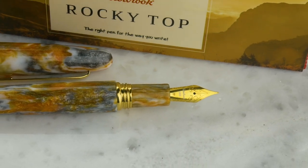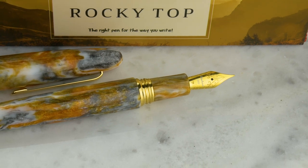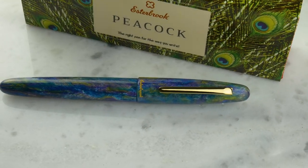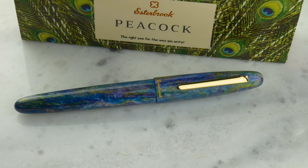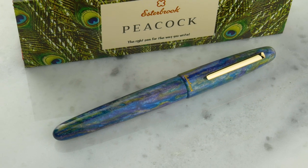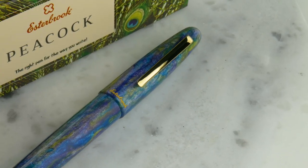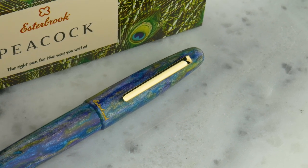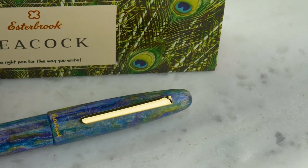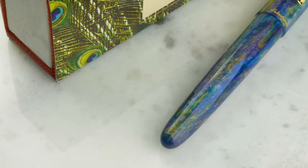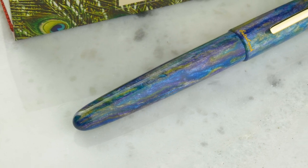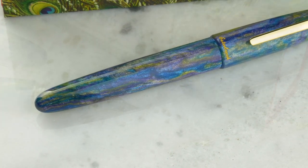They come in standard extra fine, fine, medium, broad, 1.1, or the Journaler nib. All steel nibs, gold plated. I like this Rocky Top a lot. They spruced up the box too with a nice glossy sleeve. I like that it's not huge and doesn't take up a ton of room on your shelf.